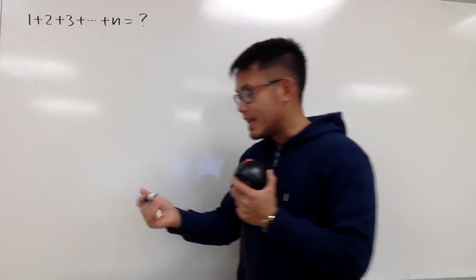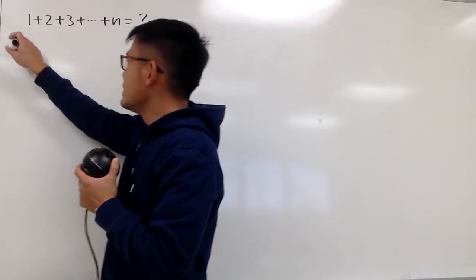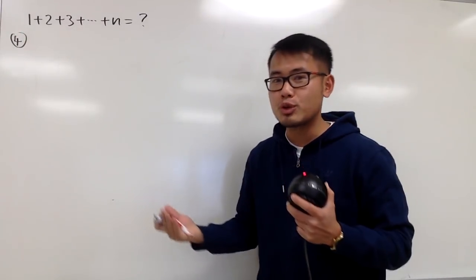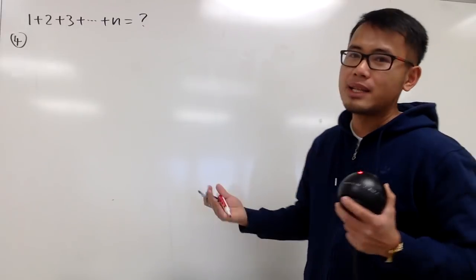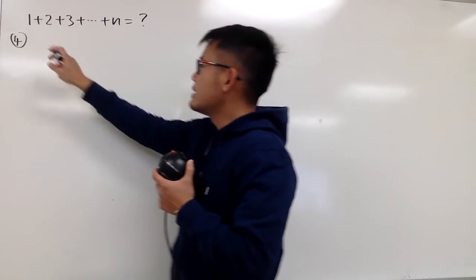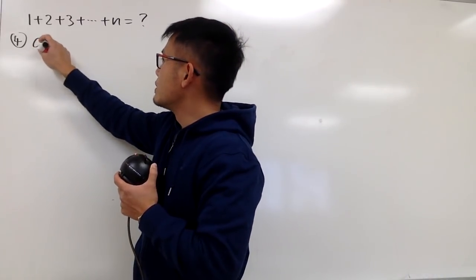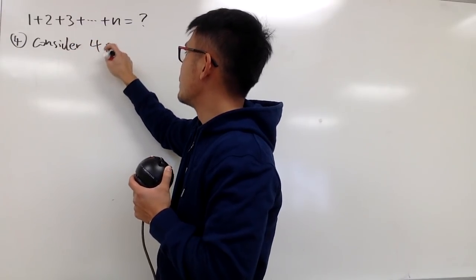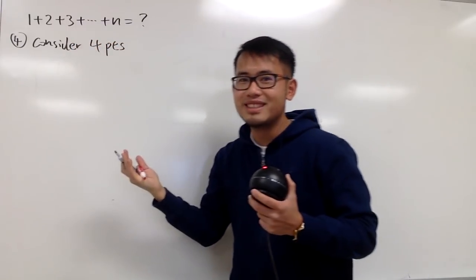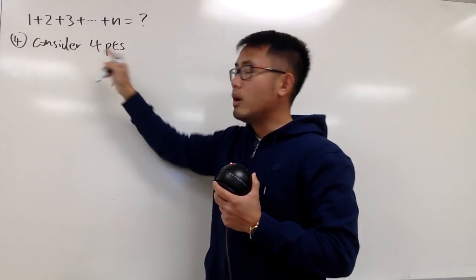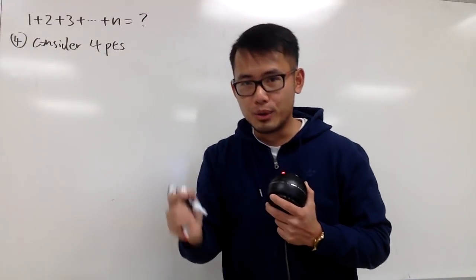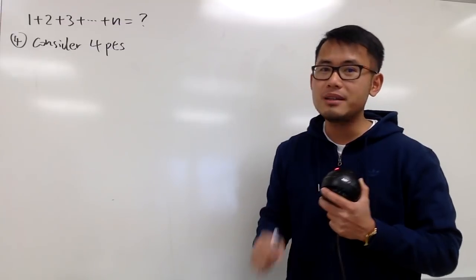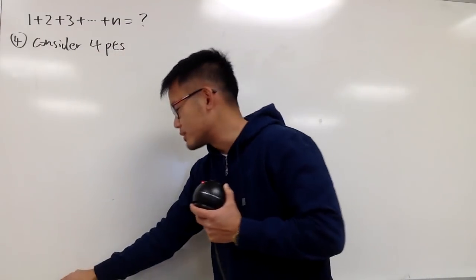The fourth way is that we'll be using a combinatoric argument for this. Let me just demonstrate with an example, and you guys will see the pattern will follow along. So let's say I want to just consider maybe just four points for simplicity, four non-collinear points, meaning that I don't want three of the points to be on the same line.